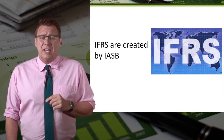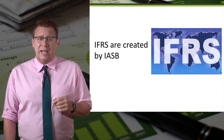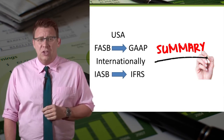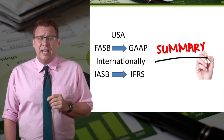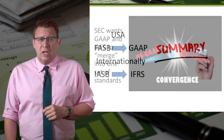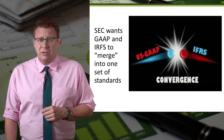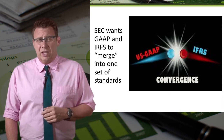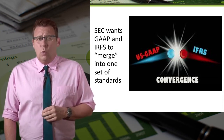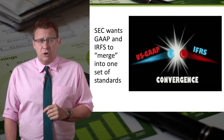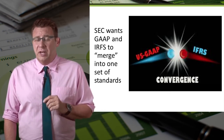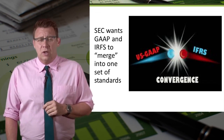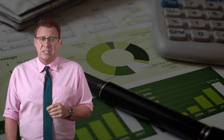IFRS is created by the International Accounting Standards Board, or the IASB. So to summarize: in the U.S., the FASB creates GAAP, and internationally, the IASB creates IFRS. The SEC wants GAAP and IFRS to merge, or converge, into one set of standards worldwide. This process has been incredibly slow and began in 2002, but it does continue. And that concludes this brief review of the purpose of financial accounting.